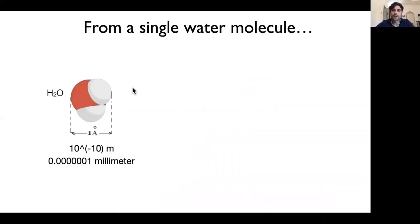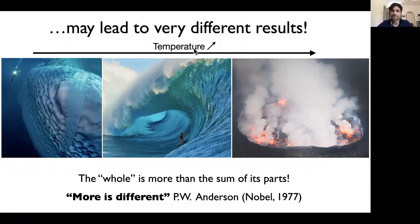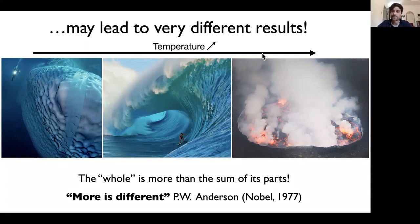Let us start with the basics: a single molecule of water, a very tiny object — tens of millions of a millimeter. If I consider very many of them — of the order of 10 million billion billions, the Avogadro number, the typical number of molecules in a drop of water — depending on temperature, this may lead to very different results: ice, the liquid state, and the gas state. These three very different systems are made of the very same components: water molecules.